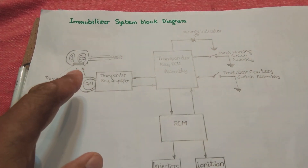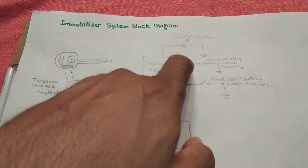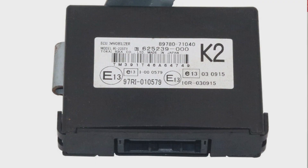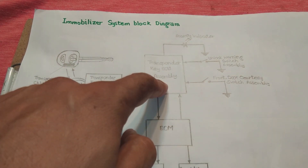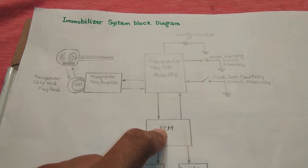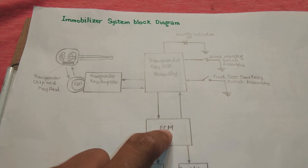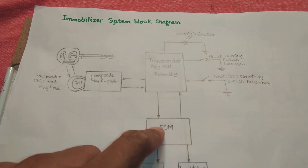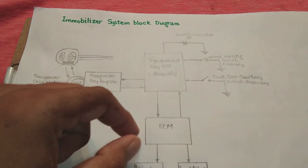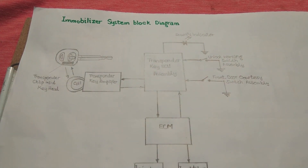When we put the key in the cylinder, there is a switch known as the unlocking warning switch assembly. This switch is closed and provides a ground to the transponder key ECU assembly — a small computer specifically for the key. In some cars this transponder key ECU is not separate; it is integrated inside the main ECM. In older cars the main ECM shared a portion for the transponder key ECU, but in newer cars it is a separate unit with special communication between them, known as synchronization.